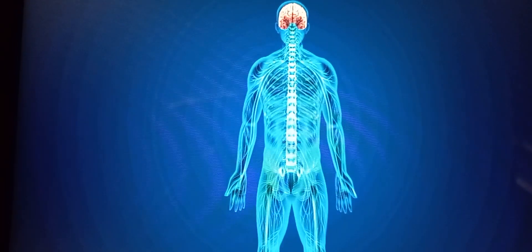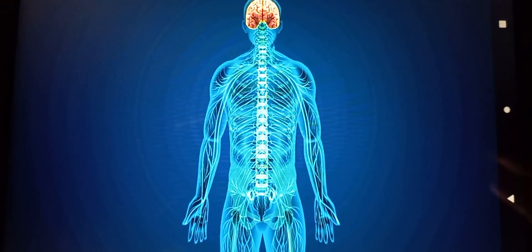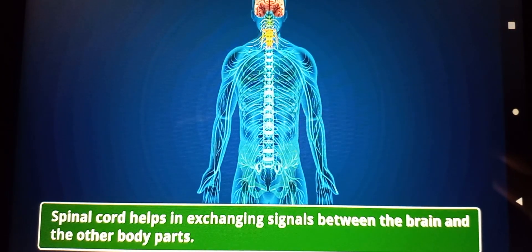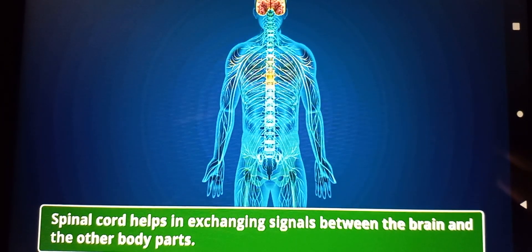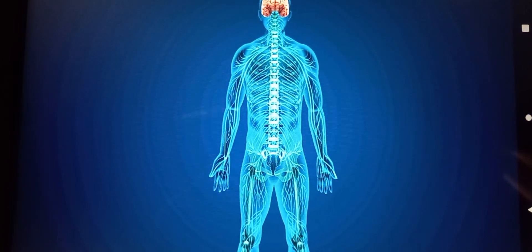This transmission of signals is done by the spinal cord. It connects the brain with the rest of the body and helps in exchanging signals between the brain and the other body parts. Let us learn how this happens.